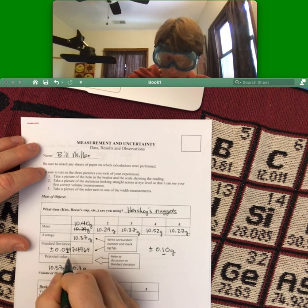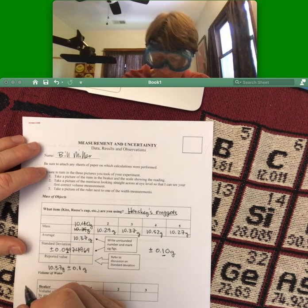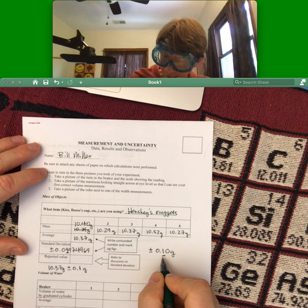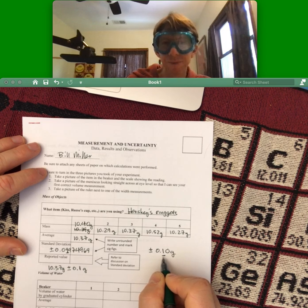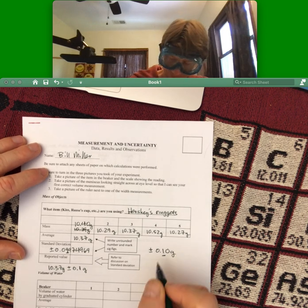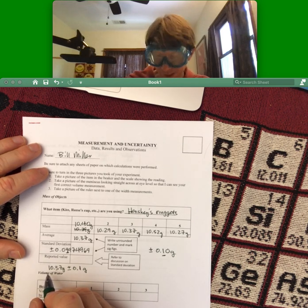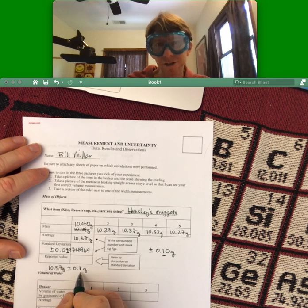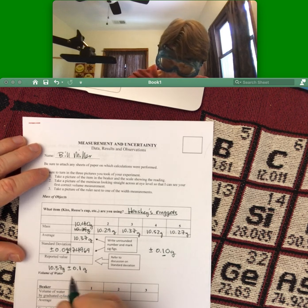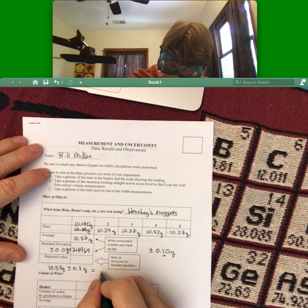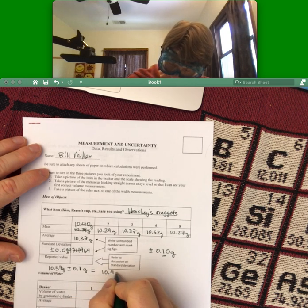Hmm, this rounding thing is weird. I should only have one sig fig when I get my one sig fig here—that's the one that I need. But I'm looking at my 10.37, and my 10.37 goes to the hundredths place, and my standard deviation goes to the tenths place, so I actually have to write my final answer 10.4 grams.